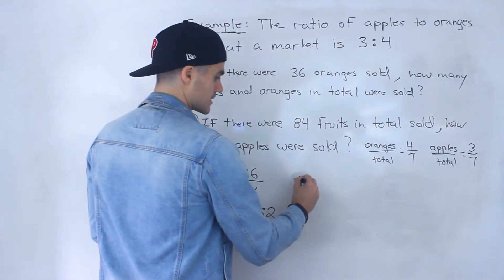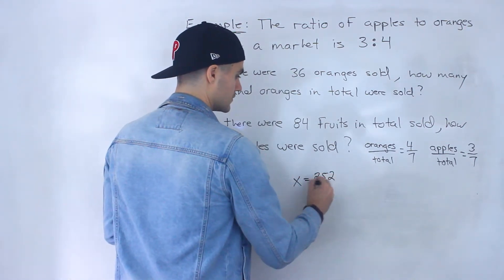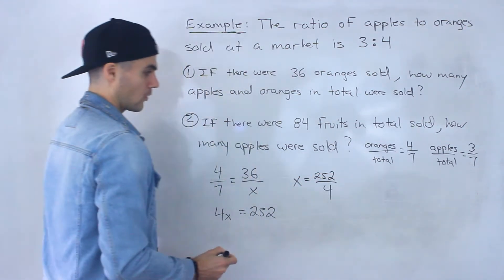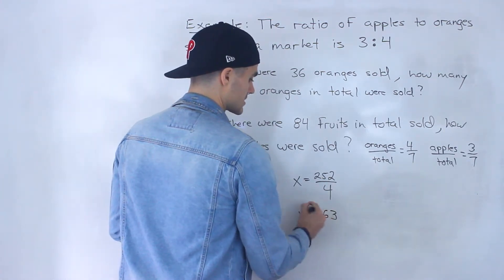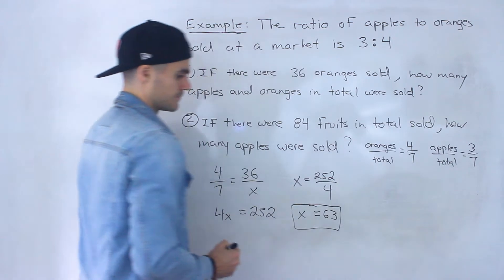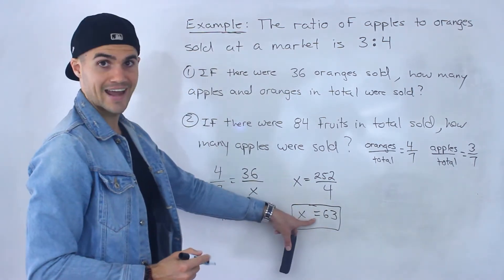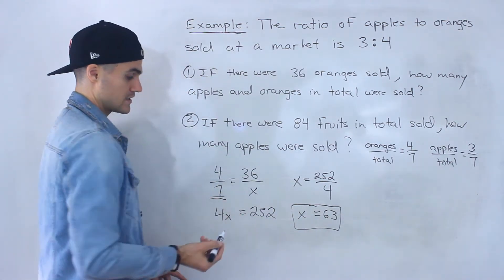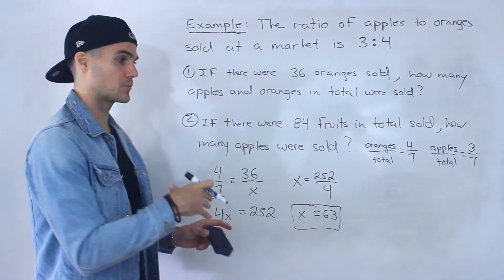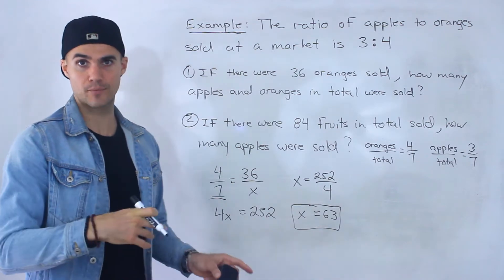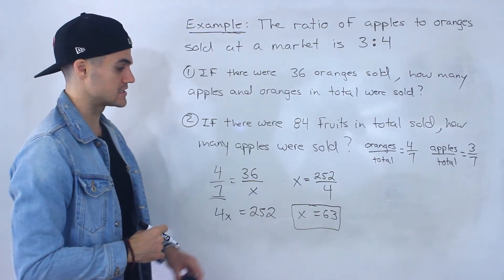Notice x is going to be 252 over 4, which would give us 63. We end up getting that answer right away because we're dealing with the total in the ratio, versus before we had to find the apples and then add the apples and oranges to get this 63.